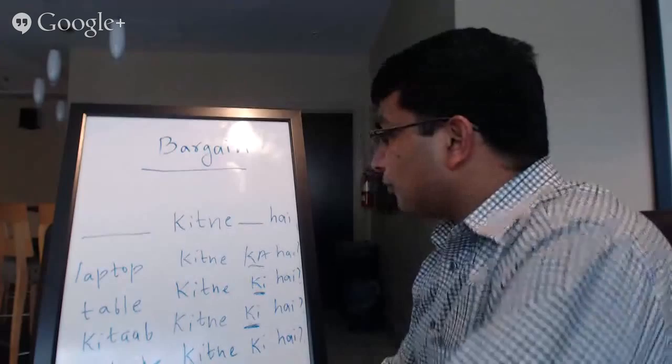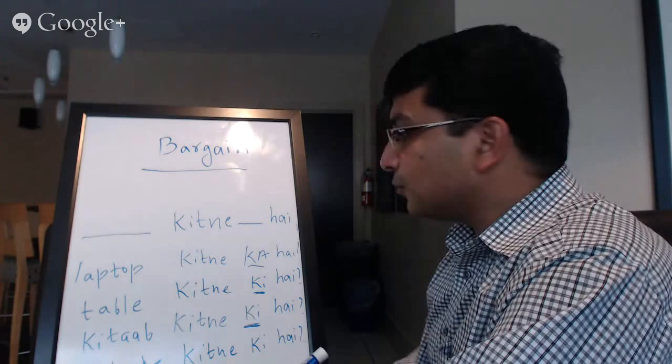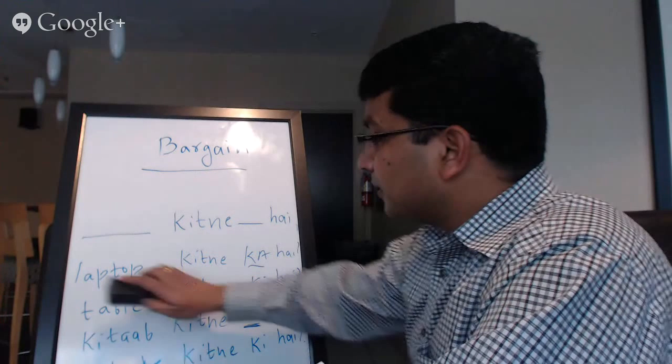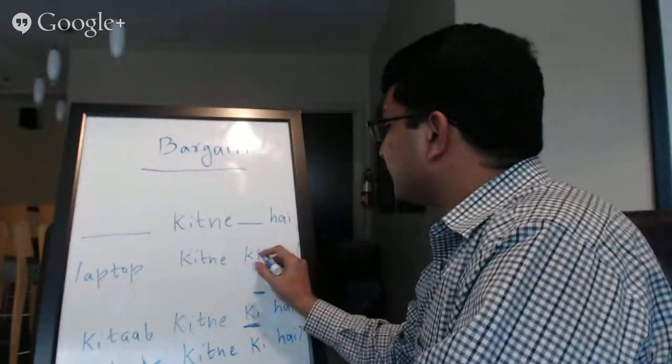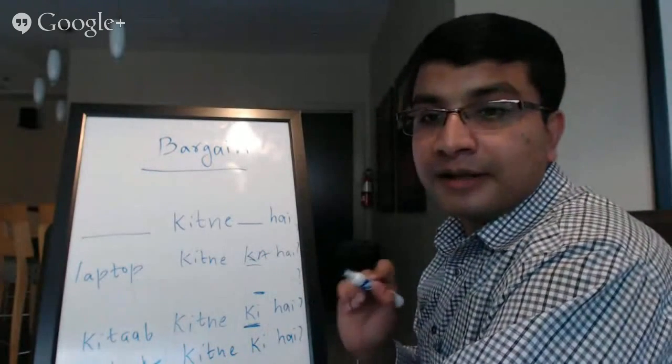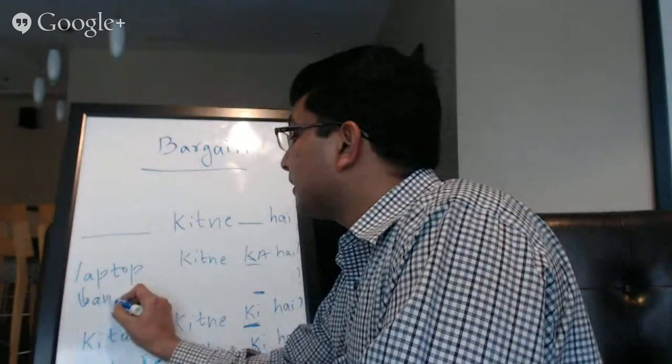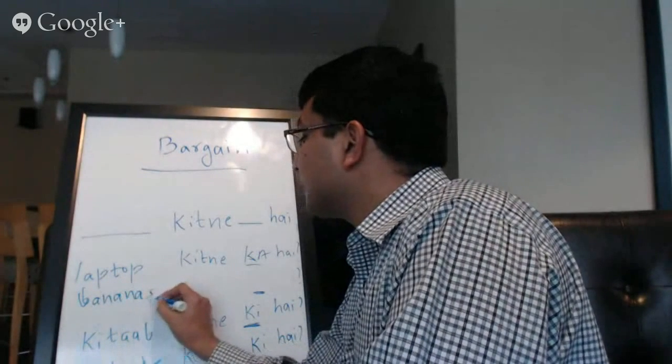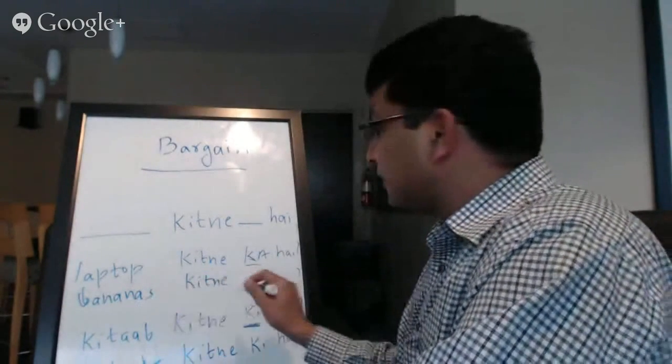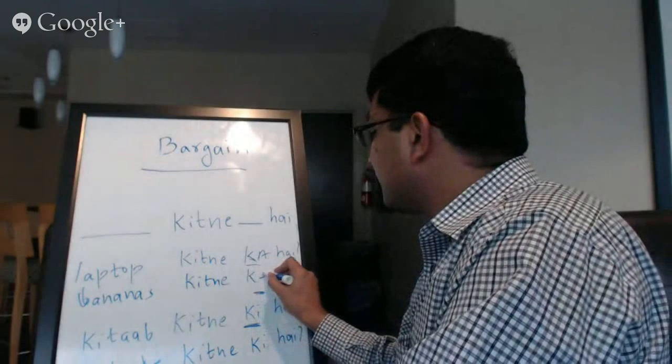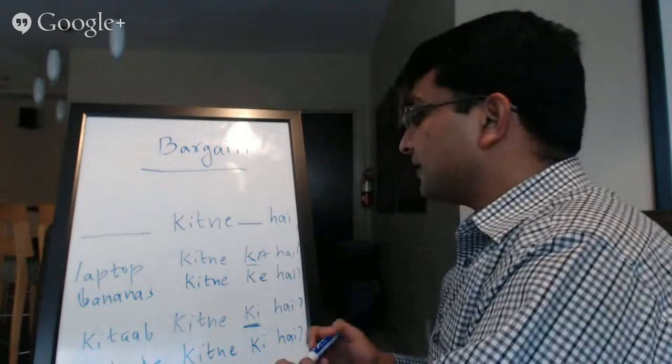So, as a rule of thumb, let's take one more example where we have masculine plural. First is like laptop kitne ka hai. Let's take a fruit, banana. In this case, it will be plural. Bananas kitne, because it's masculine and it's plural, it would be kitne ke hai. Bananas kitne ke hai.